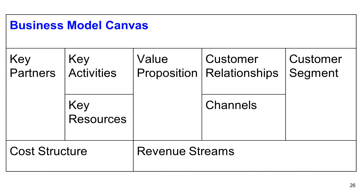This canvas has nine important questions. At the middle is called the value proposition. On the left side are key activities and key resources. On the right side are customer relationships and channels. On the far left side is key partners. On the far right side is the customer segment. At the bottom is cost structure and revenue streams. I will explain more details later.